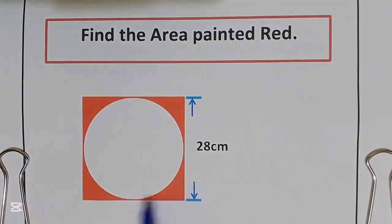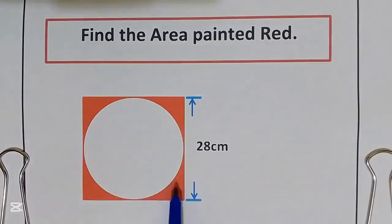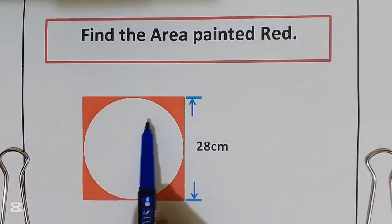We have a square that is painted red and at the middle it is painted white.